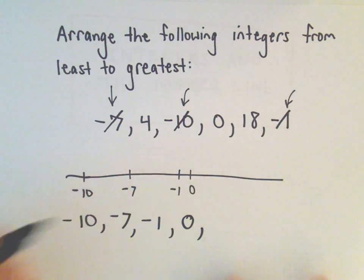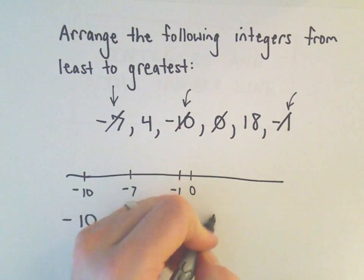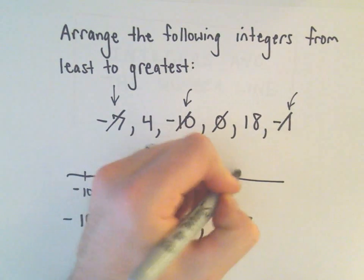0 would be the next number. And then last but not least, we've got 4 and 18. Well, certainly 4 is smaller than 18.